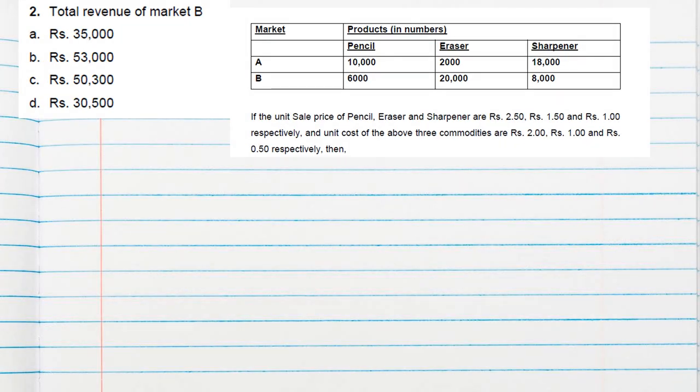Question number two asks for the revenue of Market B. We already calculated this from the second row: 6,000 × 2.5 = 15,000; 20,000 × 1.5 = 30,000; 8,000 × 1 = 8,000 — giving 53,000. So option B is correct.